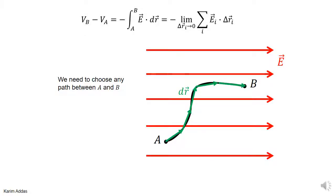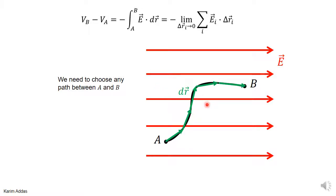We're going to address exactly the same problem as the previous two videos: a problem where the electric field is uniform, always the same value everywhere, always pointing in the same direction. The question is exactly the same — what's the potential difference between point B and point A? But we want to now do it for an arbitrary path and show very clearly that it doesn't depend on the path.